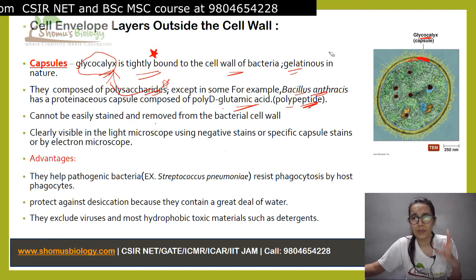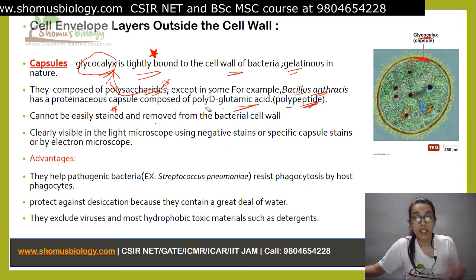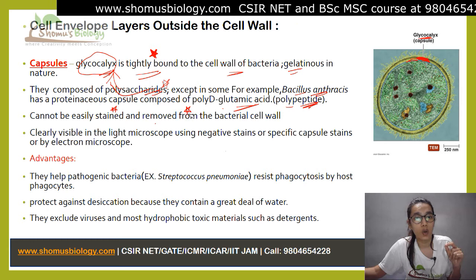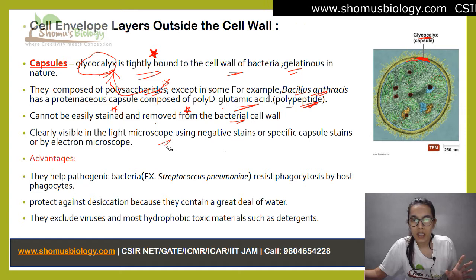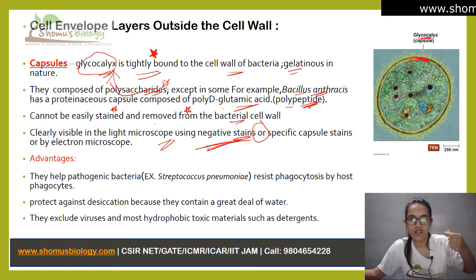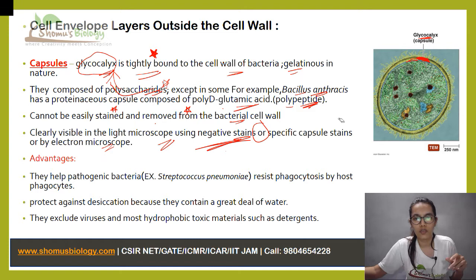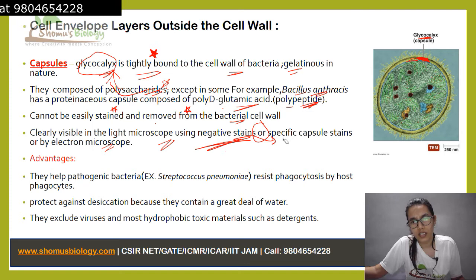This capsule is tightly bound and cannot be easily stained, and once you stain them the stain cannot be easily removed from the bacterial cell wall. They could be clearly visible in a light microscope if you use negative stains, or you can see this specific capsule by using specific capsule staining in the electron microscope. The negative staining method we normally use is Maneval staining.